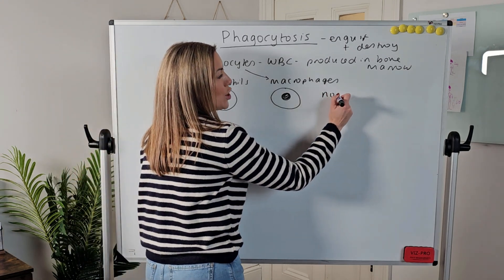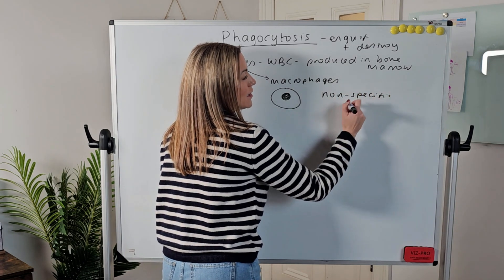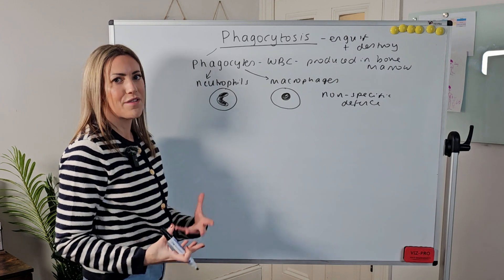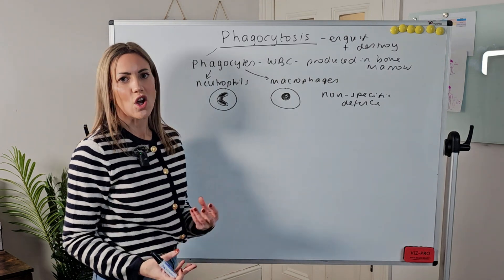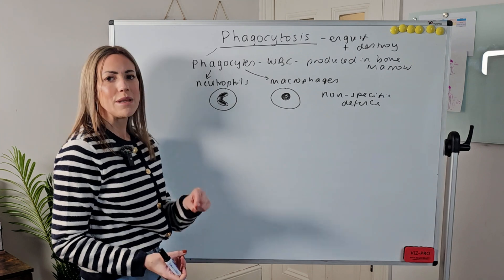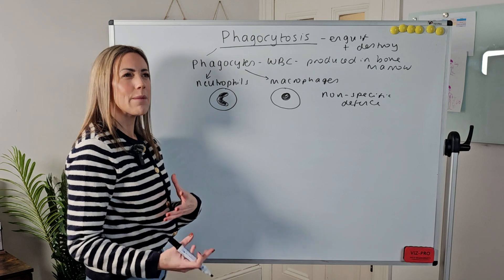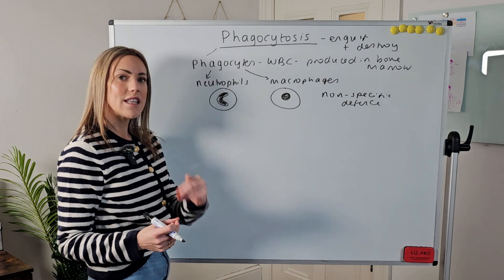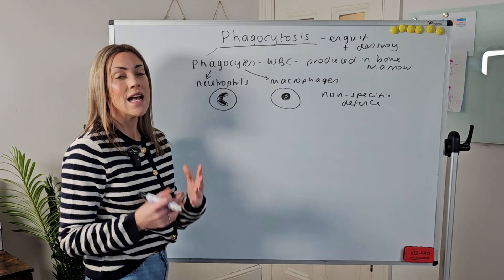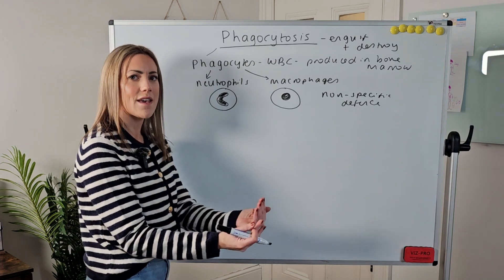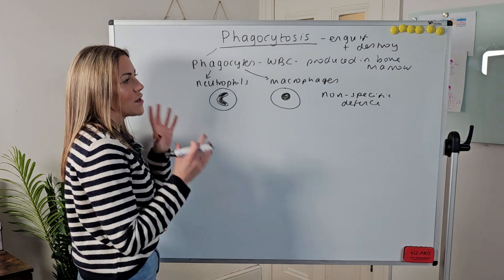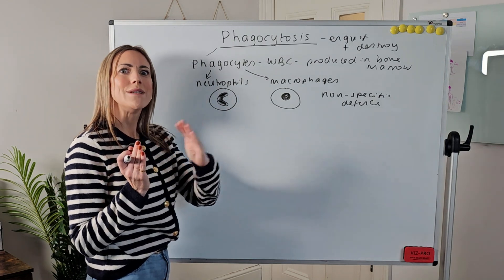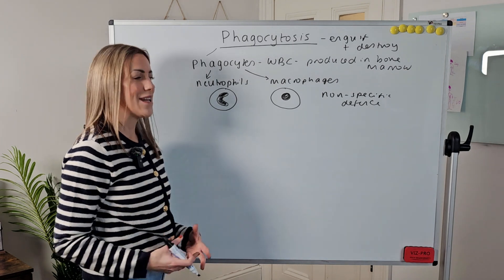They're part of our non-specific defense, or non-specific immune response. What that basically means is whatever the pathogen is — if it's got foreign antigens on its surface — it can be destroyed by these phagocytes. Whereas if you think about your T lymphocytes and your B lymphocytes, they are specific because they have specific receptors on their cell surface membrane that will only be complementary to specific foreign antigens. So this is non-specific — it's kind of like the first line of defense once the foreign pathogen is in our bloodstream.